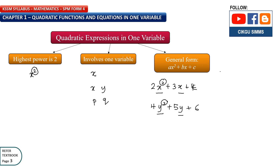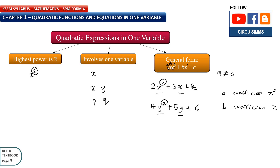Based on this general form, a cannot equal 0. If a equals 0, then 0 times x squared becomes 0, so the highest power drops to 1, making it linear — not quadratic anymore. So for a quadratic, the condition is a must not equal 0. A is called the coefficient of x squared, b is the coefficient of x, and c is just a constant.